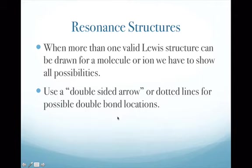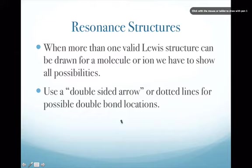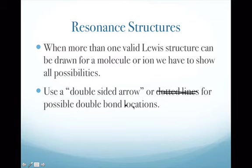That's it for structural formulas — we'll revisit them in class when we build molecule models. Resonance structures occur when there is more than one valid Lewis structure. We use a double-sided arrow to show all possible double bond locations.